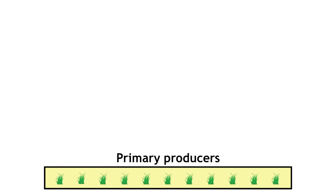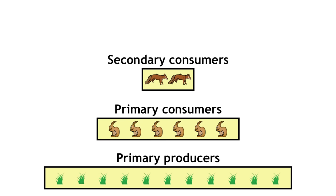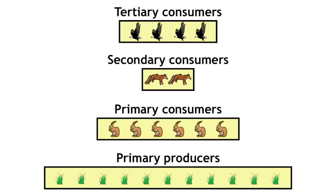The bottom of the pyramid represents the primary producers, the first trophic level. On top of that go the primary consumers, the second trophic level, and so on up through the secondary consumers, tertiary consumers, until you reach the highest trophic level in that ecosystem.